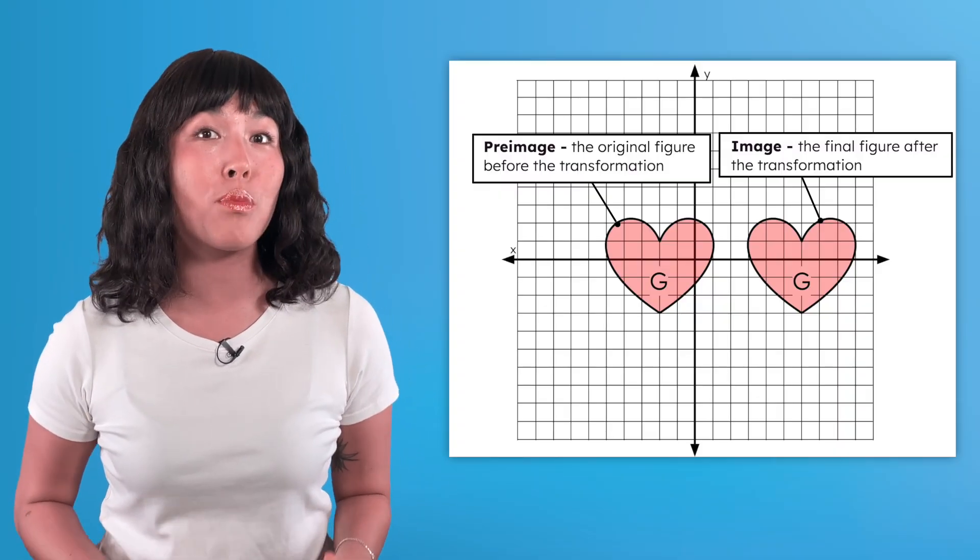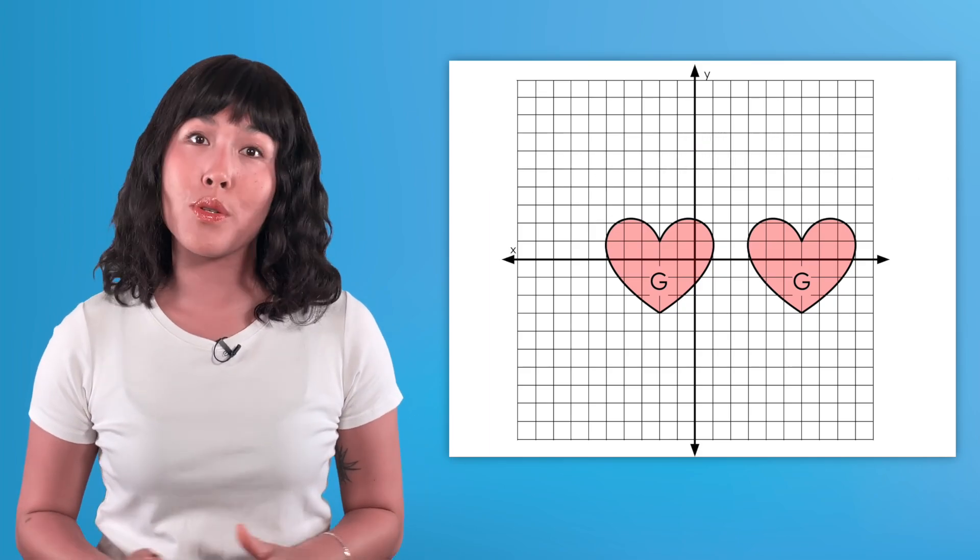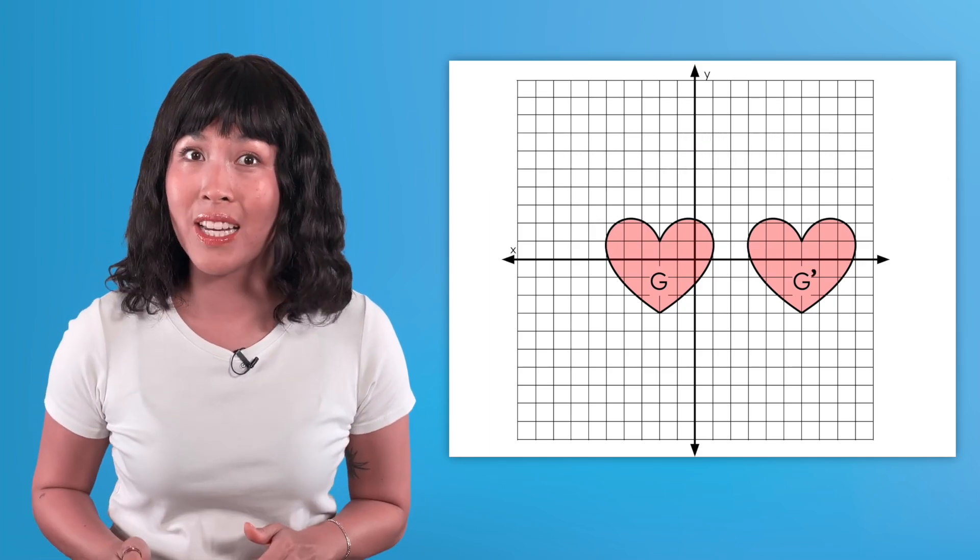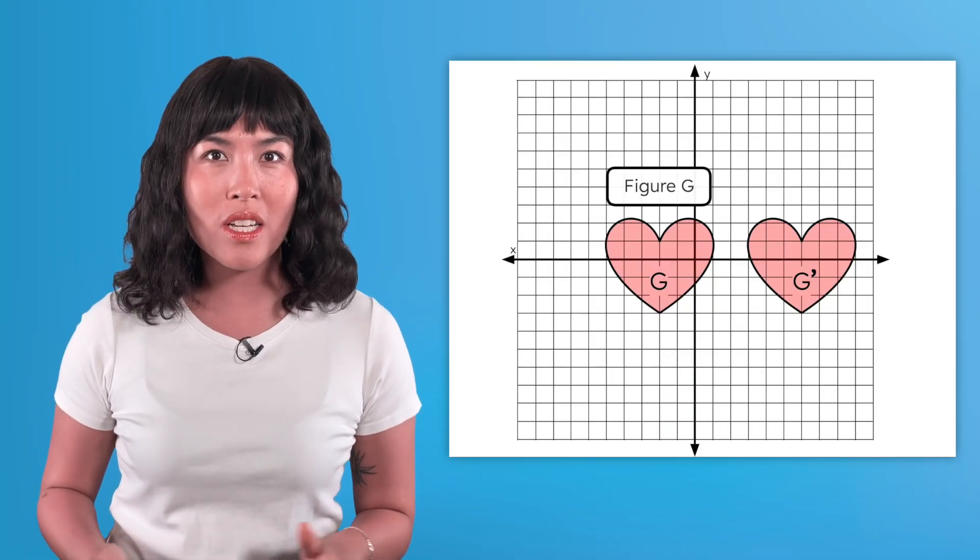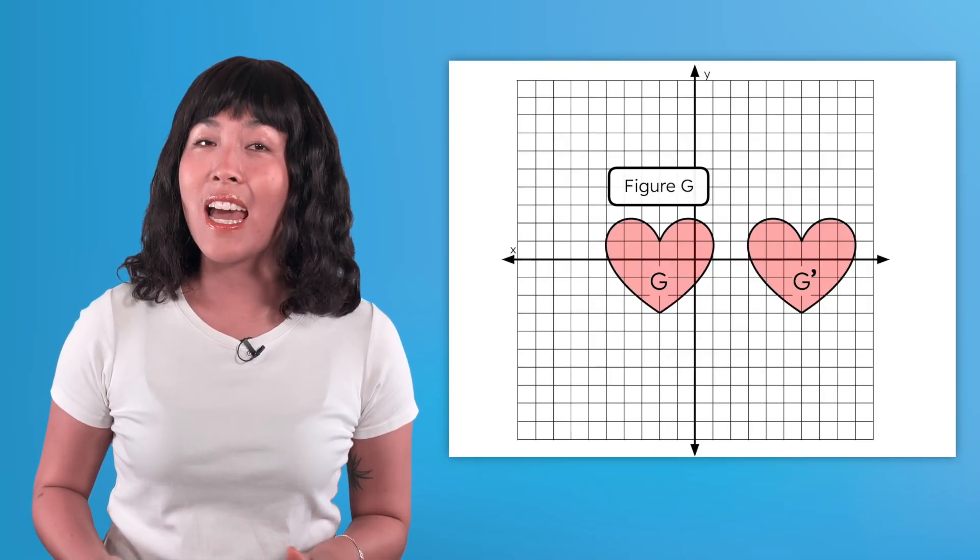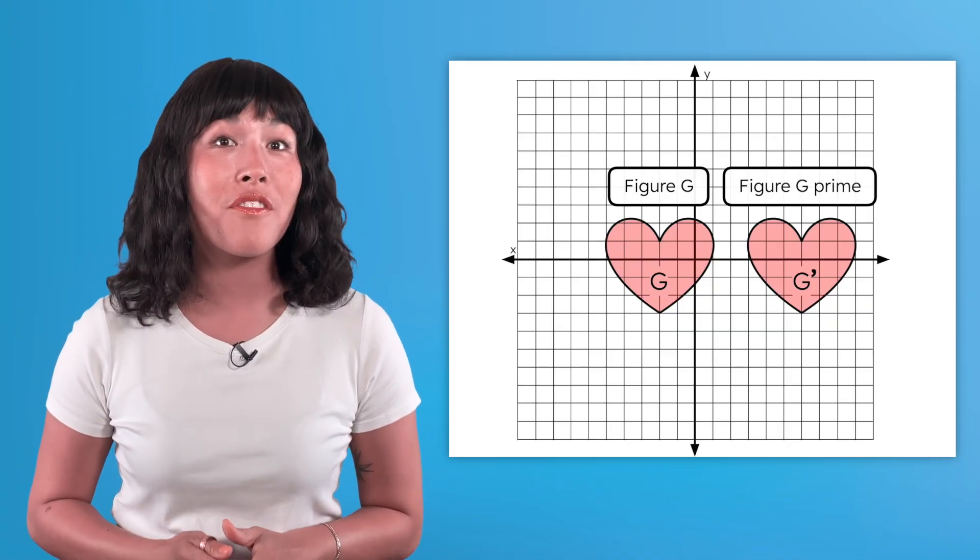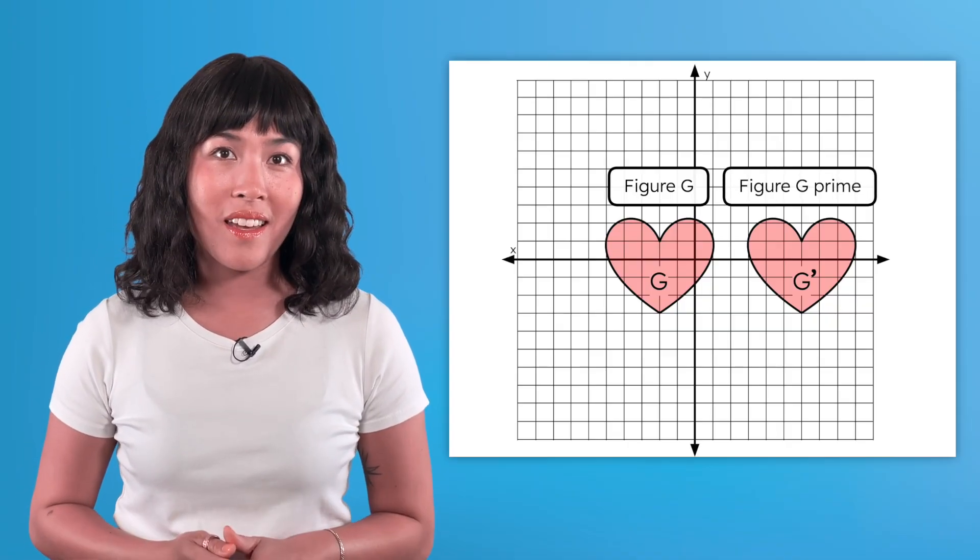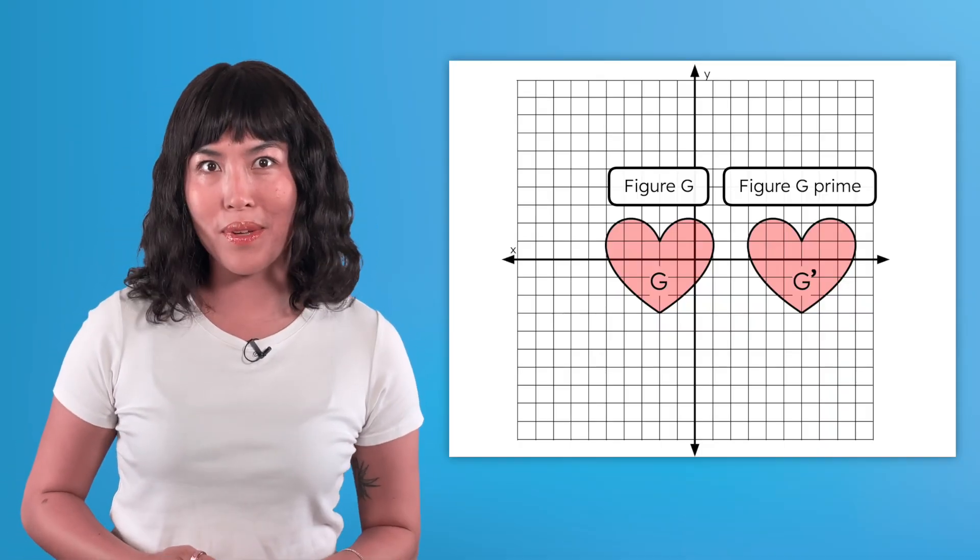Figures won't always be labeled pre-image and image though. Another way to distinguish between them is putting an apostrophe next to the letter of the image, like this. The pre-image is just called figure G and the image is read with the apostrophe as figure G prime. Having different labels for them makes it easier to tell which one's the original pre-image.